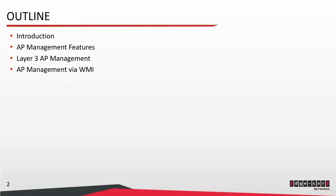We'll begin by giving an introduction to our AP management. The Edgecore controller can manage APs across a layer 2 or layer 3 network, and through cross-layer 3 AP management, APs sitting on different networks at remote locations can also be managed. Then we'll cover key features supported in our AP management, such as how to add a large number of APs at one time. This is followed by the introduction of layer 3 AP management, where we will explain complete tunnel and split tunnel in more detail and compare their differences. Then we will show you a deployment example where split tunnels are used. Last, we have an appendix for showing you an example on how to set up AP management from the controller's web management interface.